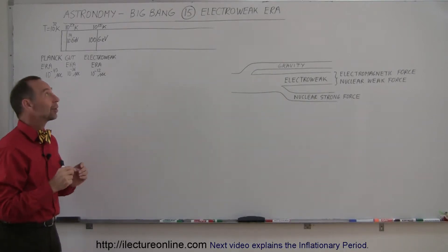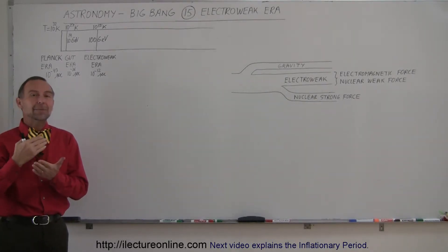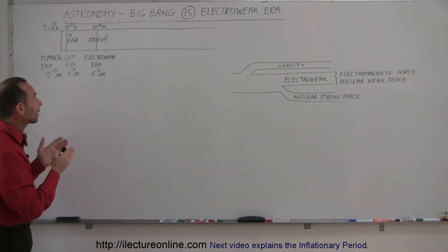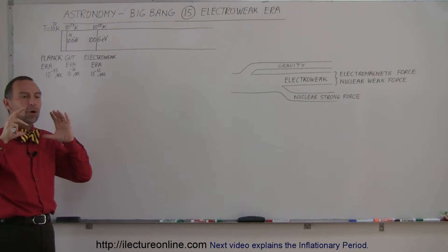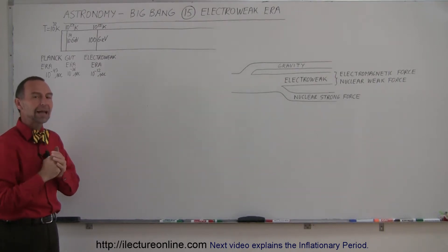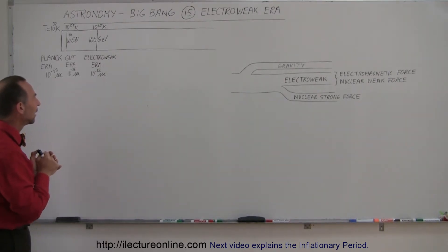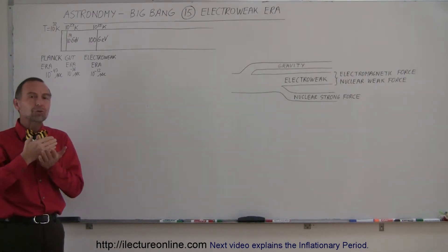Welcome to Lecture Online, and now we're going to take a look at the next era in the beginning of the universe. So first we had Planck era, then we had the GUT era, where we had all the forces united except for gravity, which had separated from the other three forces. And now we're getting into what we call the electroweak era.